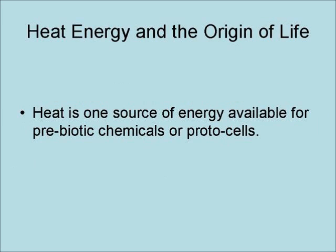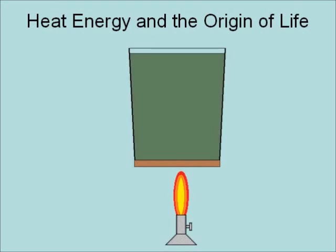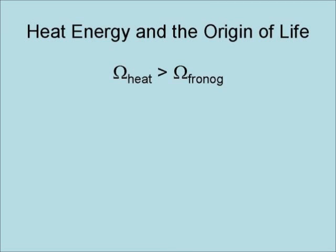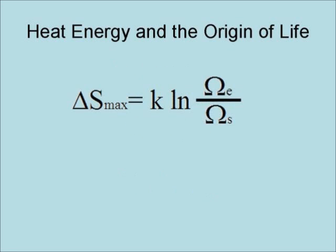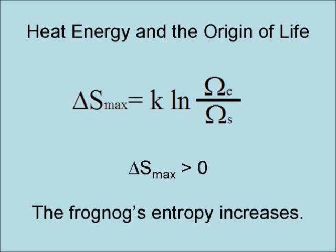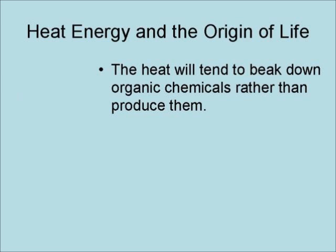Heat is one source of energy available for prebiotic chemicals and protocells. However, heat applies energy to a system in a random manner — in fact, it is more random than the frog nog or any other prebiotic soup. The result is that you cook the frog nog. Mathematically, omega heat is greater than omega frog nog, meaning Ω_E = omega heat and Ω_S = omega frog nog. Applying this to the formula for the change in entropy, we get delta S max is greater than zero, so the frog nog's entropy increases. Heat will tend to break down organic chemicals rather than produce them.